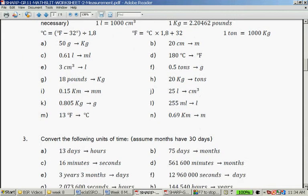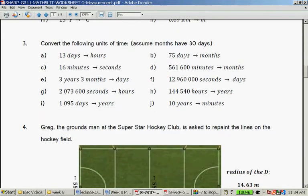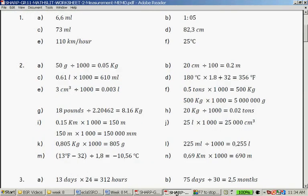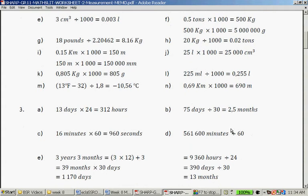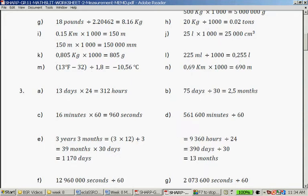Question three. Convert the following units of time. Assume months have 30 days. 13 days to hours. 24 hours in a day. So it's 13 times 24. 75 days to months, 75 divided by 30 is 2 and a half months. 16 minutes to seconds. 16 times 60 is 960 seconds. Minutes to months. So it's 561,600 minutes. So first convert to hours, divide by 60, gives us 9,360 hours. There's 24 hours in a day. So we go 9,360 hours divided by 24 and gives us 290 days. If you take the 290 days and you divide by 31, you get it's 13 months.